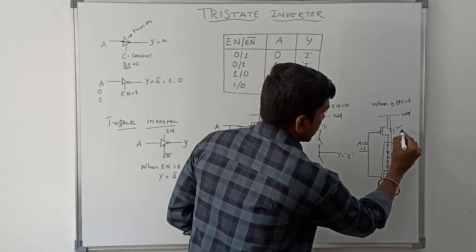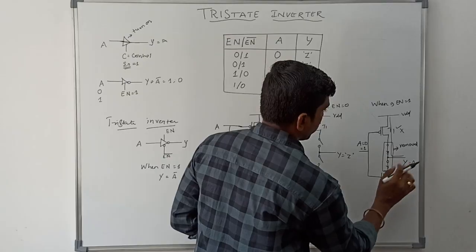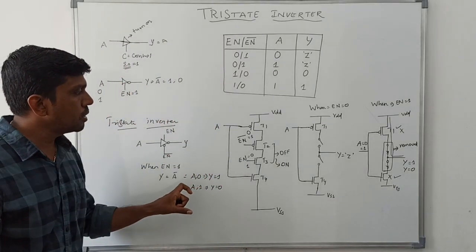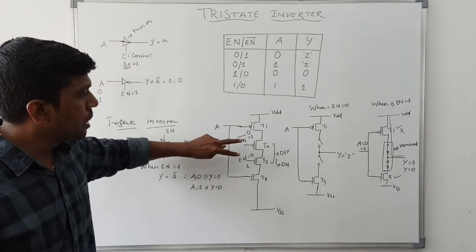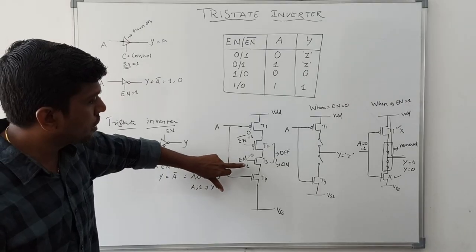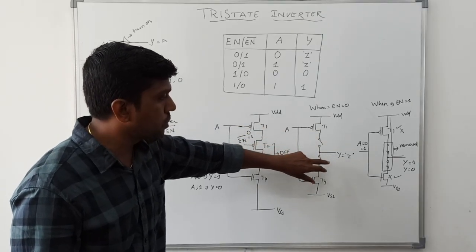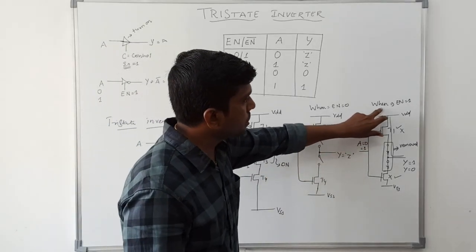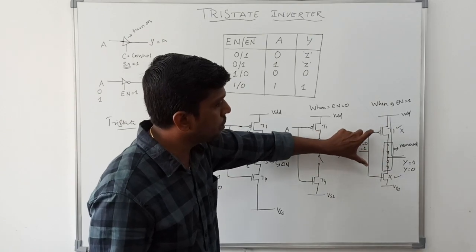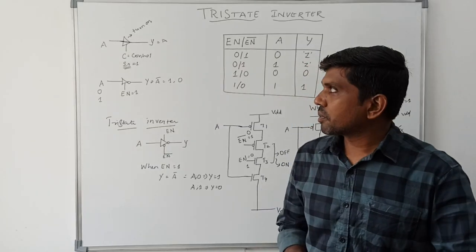When A equals one, T1 turns off and the NMOS transistor turns on, connecting the output to ground — output equals zero. So this is the normal inverter operation. Summary: the CMOS tri-state inverter has two PMOS and two NMOS transistors. T1 and T4 connect to primary input; T2 and T3 connect to enable. When enable equals zero, T2 and T3 turn off and output is high impedance. When enable equals one, T2 and T3 turn on, the circuit acts as a CMOS inverter, and Y equals A̅.